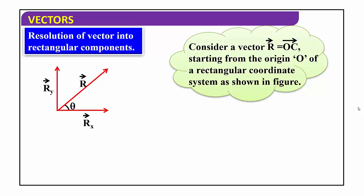Now I am going to consider a vector r along the line O to C. Vector r equals vector OC, starting from the origin O of a rectangular coordinate system. This is a rectangular coordinate system. The Rx component is along the x-axis, and the Ry component is along the y-axis. R is along the line O to C from the origin.